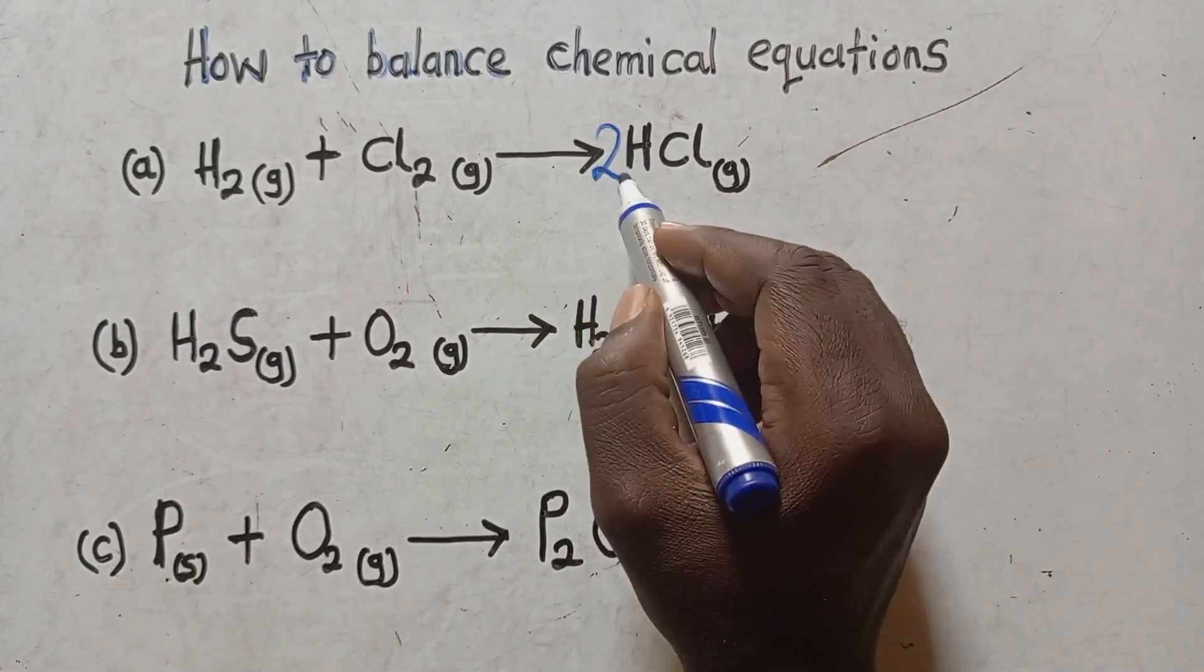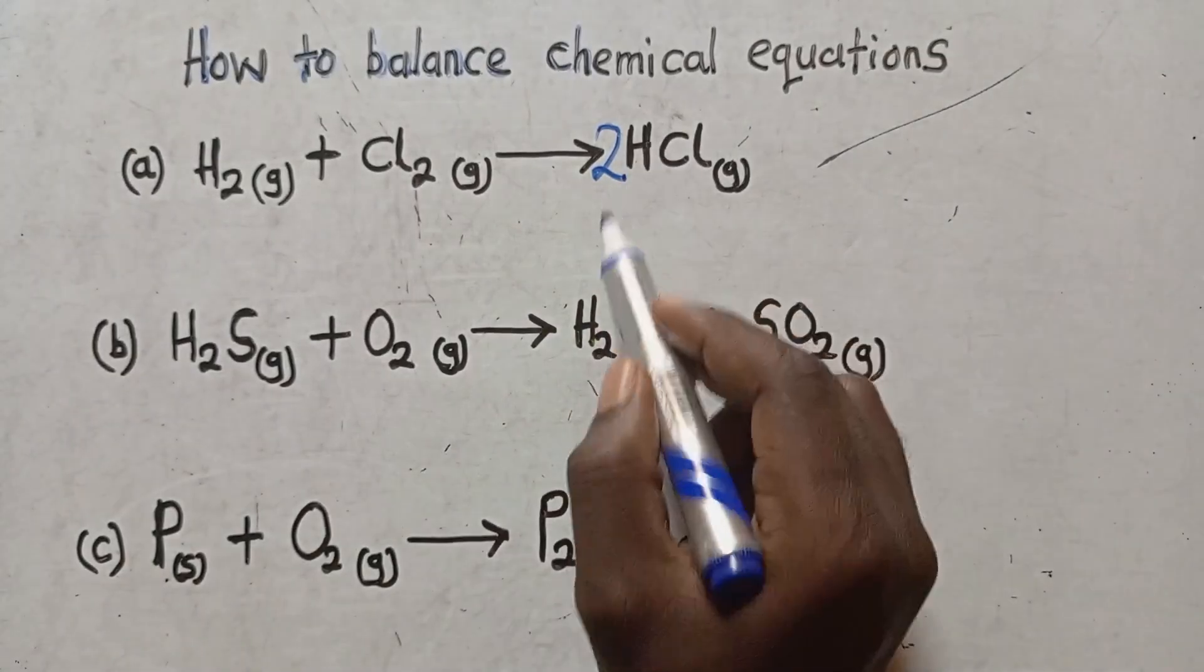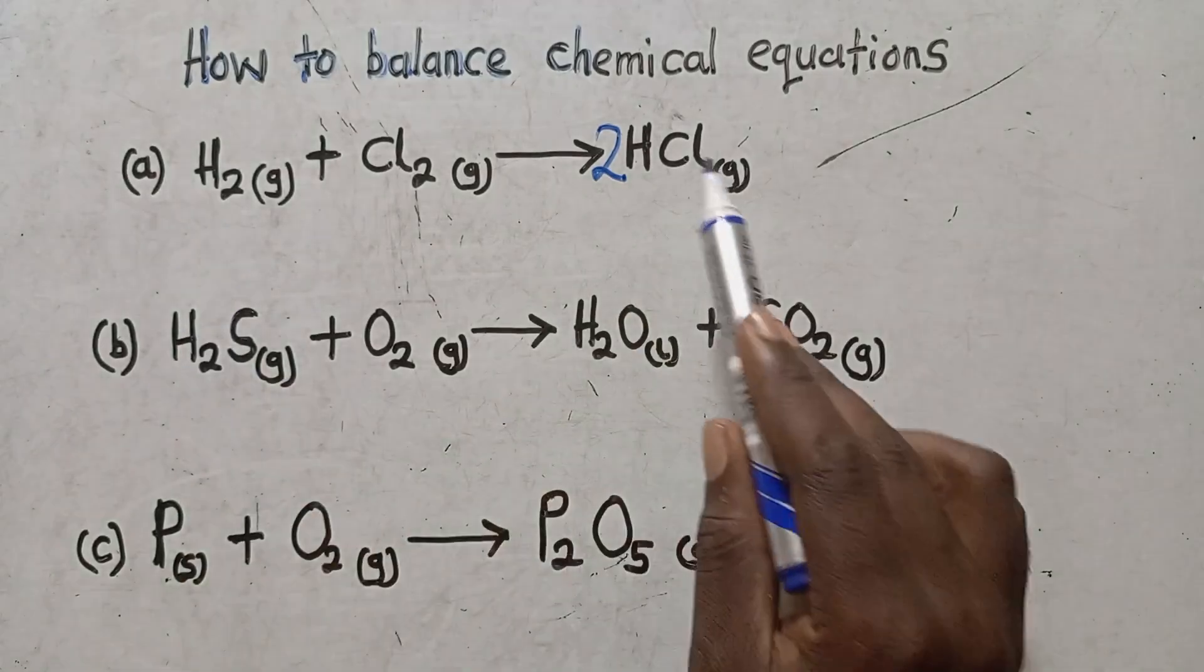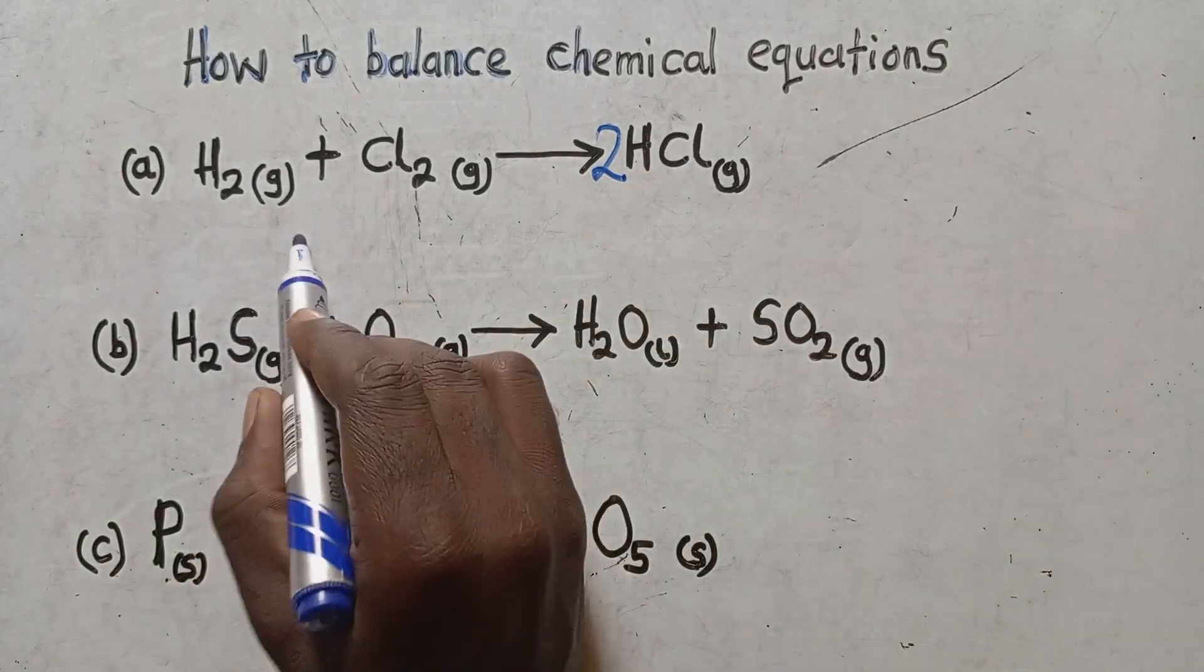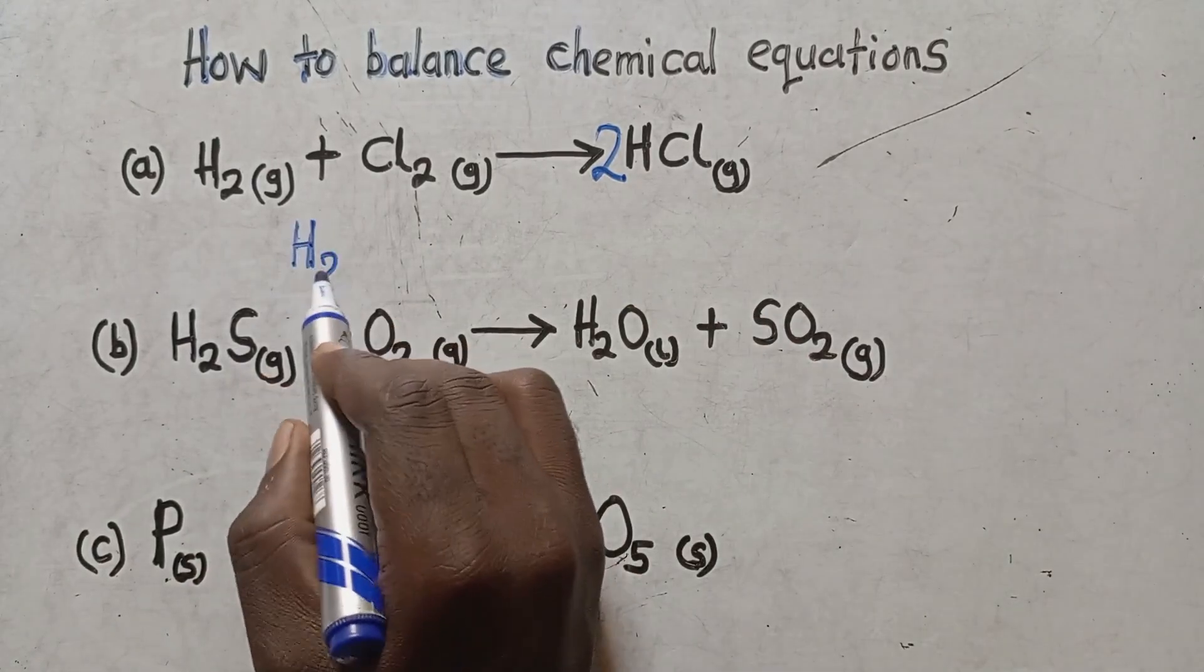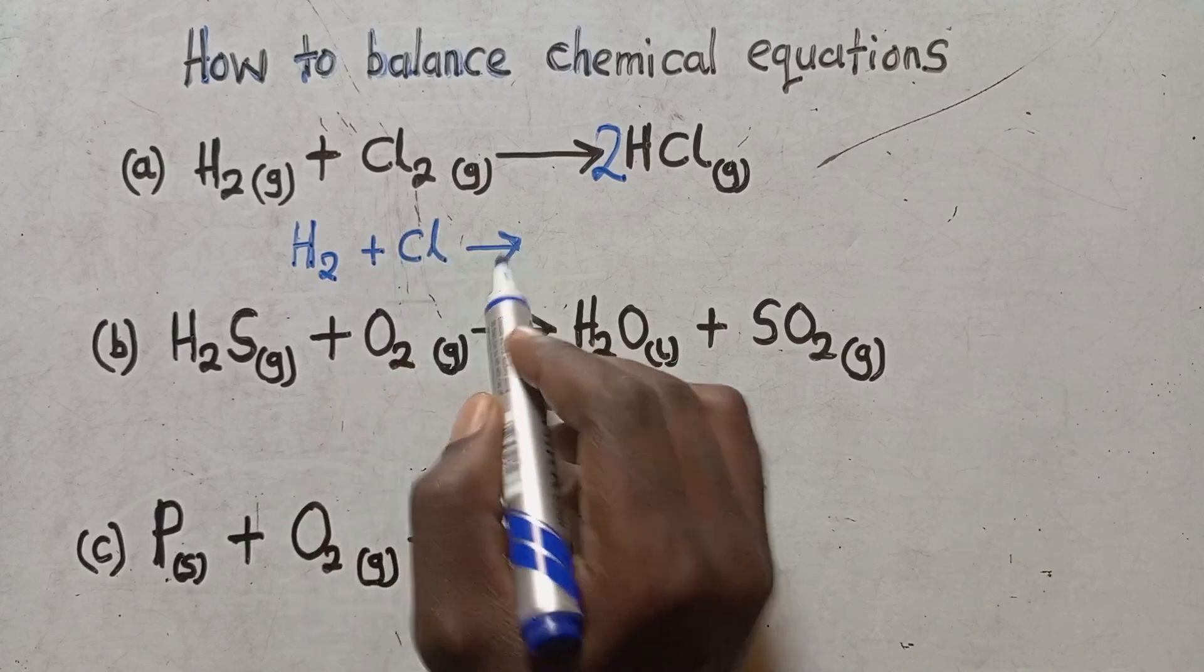What can I do to balance the two? I just have to put a two there. So once I put a two there, it means that this equation is balanced. Two atoms of hydrogen, two atoms of hydrogen. Two atoms of chlorine, two atoms of chlorine.